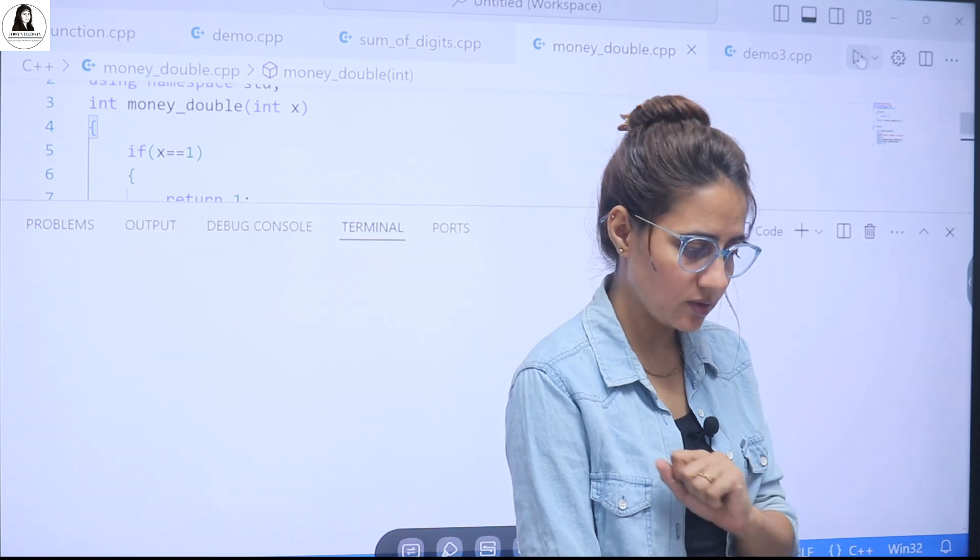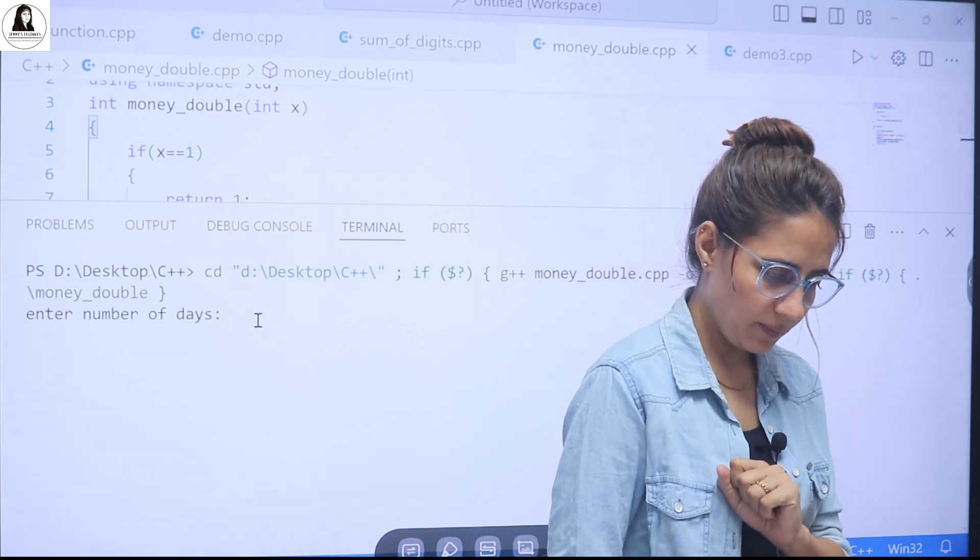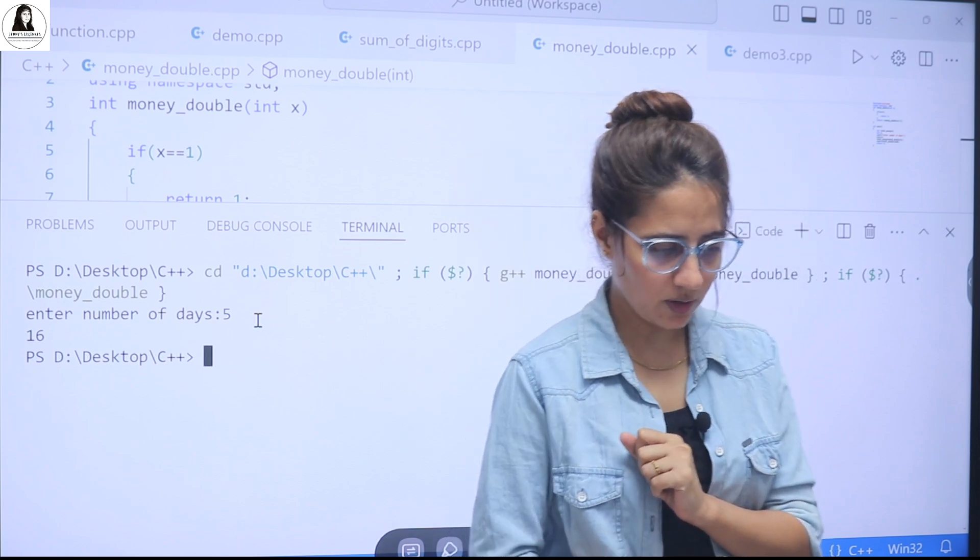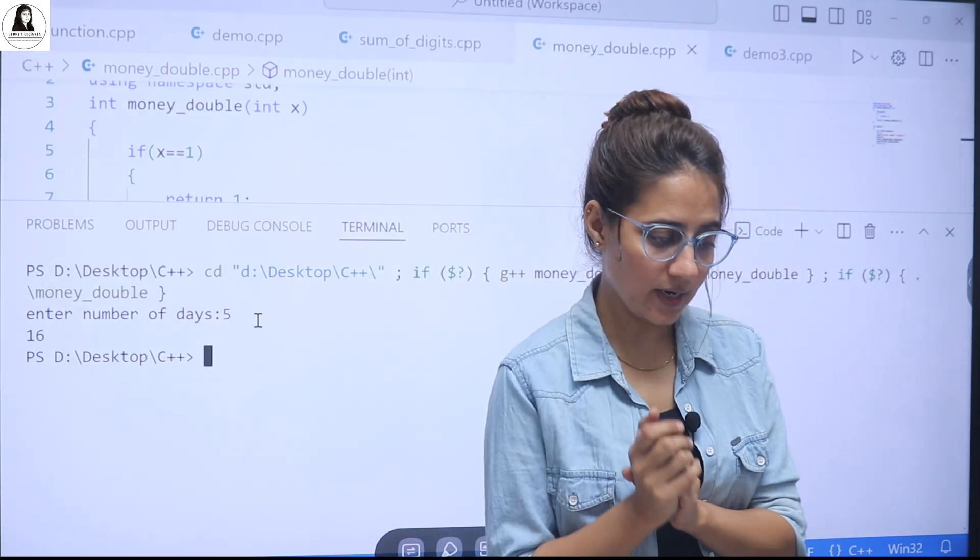So, let's run this. And see, enter number of days. Suppose I am entering number of days 5. So, after 5, after 5th day, I will have 16 rupees. And that's correct.